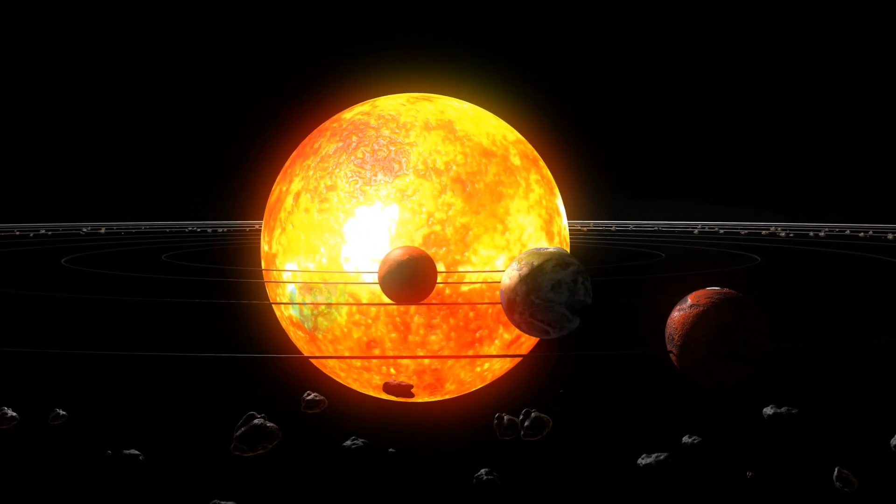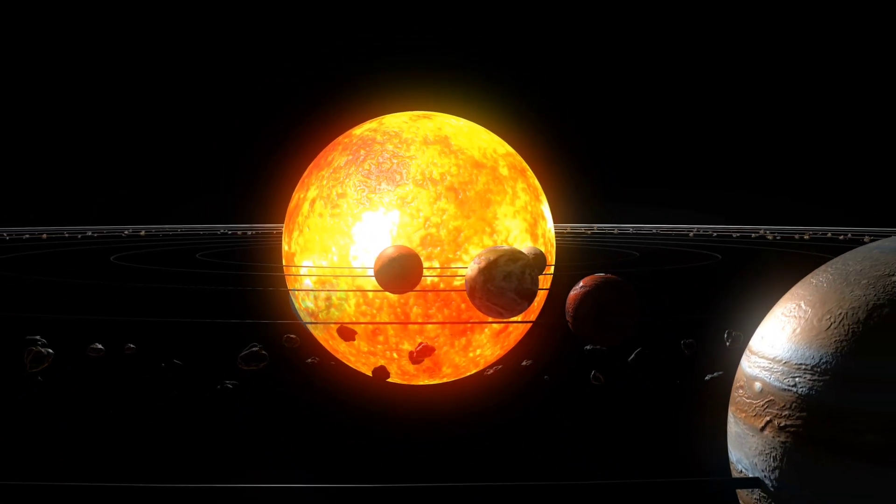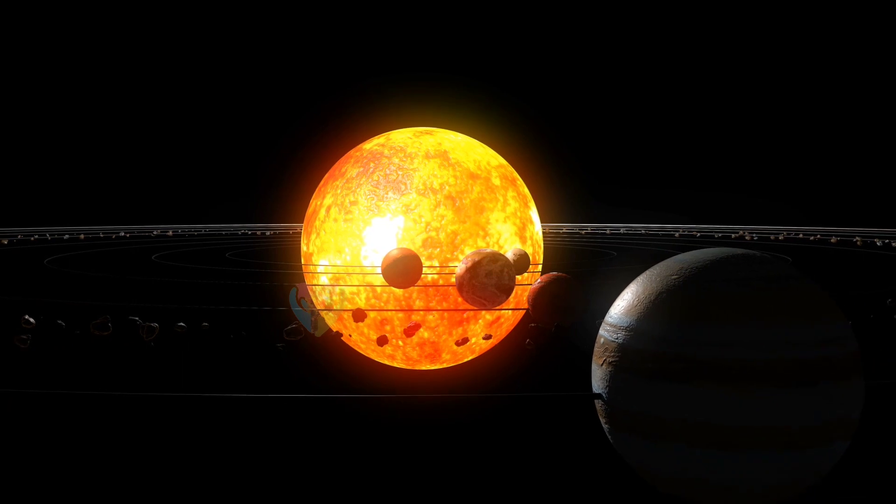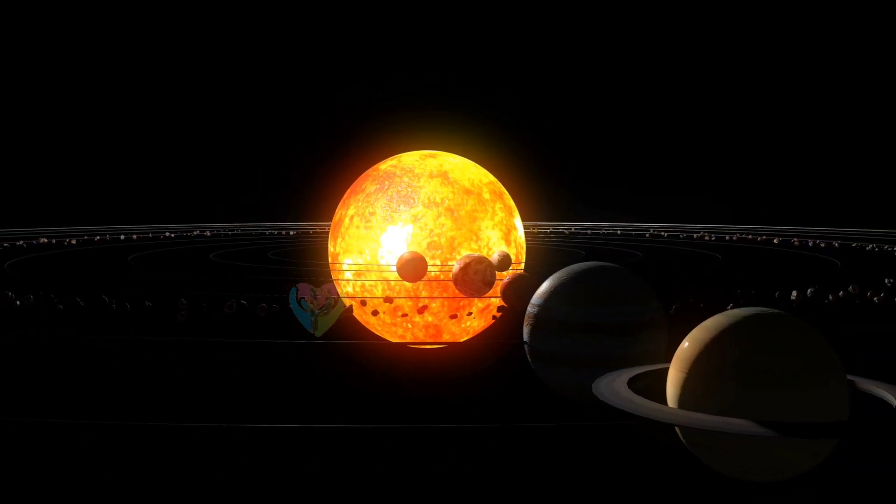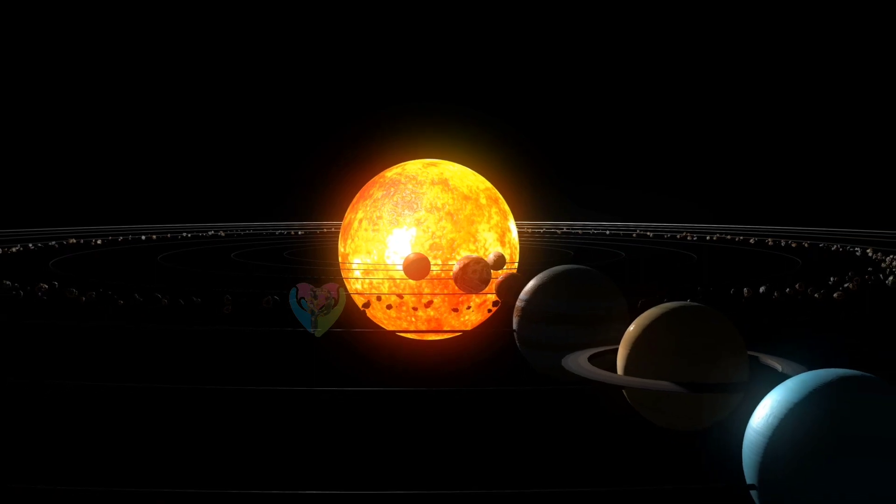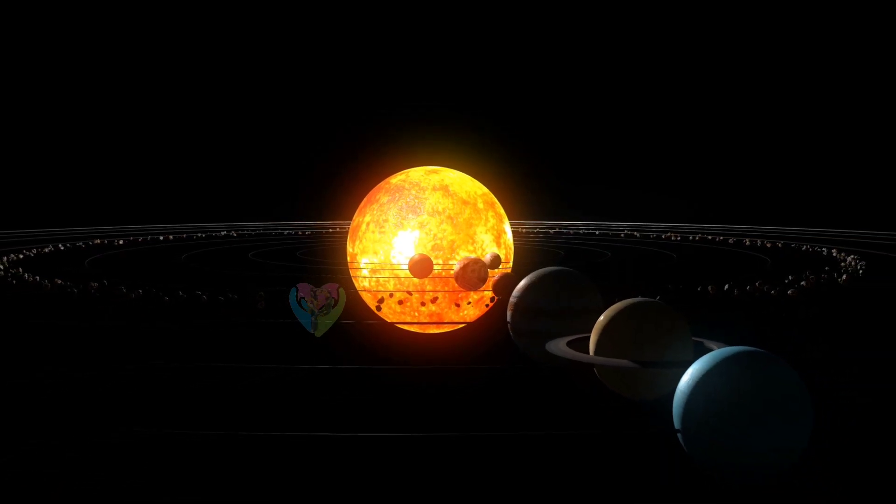The Solar System is the gravitationally bound system of the Sun and the objects that orbit it. It formed 4.6 billion years ago from the gravitational collapse of a giant interstellar molecular cloud.